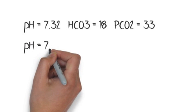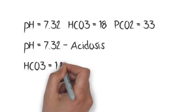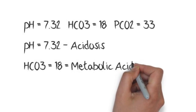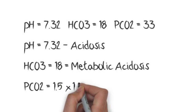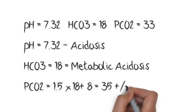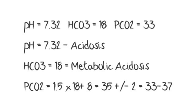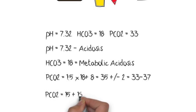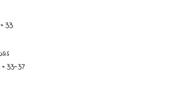Let's evaluate an ABG. pH is low, so it is acidosis, and bicarb is also low, so it is metabolic acidosis. pCO2 is 33. Using the Winters equation, expected pCO2 is 33–37, so it is appropriately compensated. Using bicarb + 15 also gives 33, confirming appropriate compensation. This is called simple metabolic acidosis.